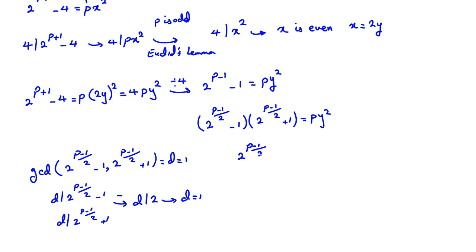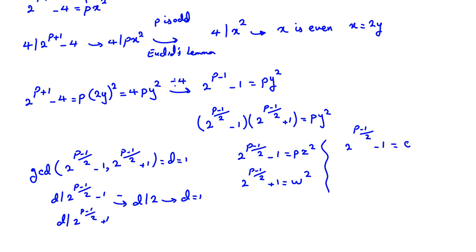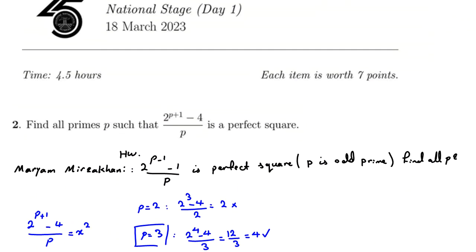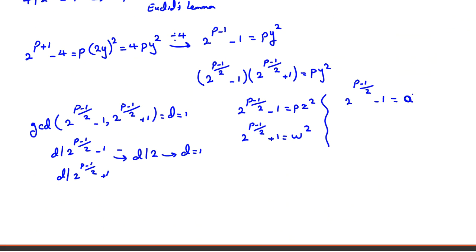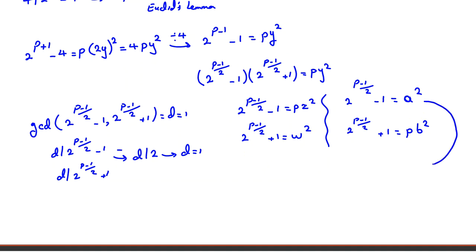Because the two factors are relatively prime, we have two cases. Either 2^((p-1)/2) - 1 = pz² and 2^((p-1)/2) + 1 = w², or 2^((p-1)/2) - 1 = a² and 2^((p-1)/2) + 1 = pb². Let's analyze the first case via mod 4. Since p is at least 7, (p-1)/2 is at least 3.